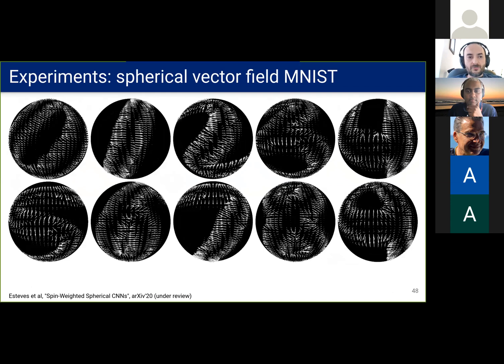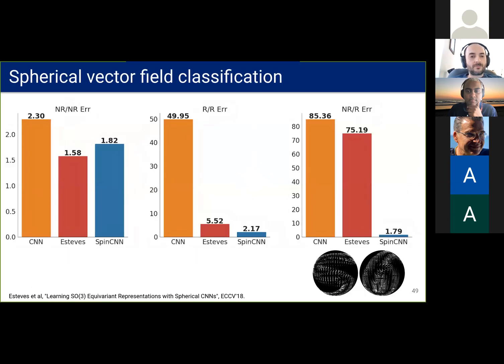Now we introduce spherical vector field datasets to study vector field equivariance. It is based on MNIST and the vectors come from image gradients that we map to the sphere. The first task on this dataset is classification. Even though the original spherical CNNs are equivariant to SO(3), they are not equivariant in the vector field sense. So they cannot generalize to vector field rotations. So the spin-weighted networks do much better on the rotated modes.